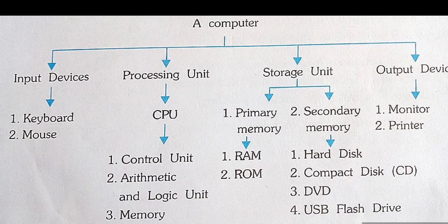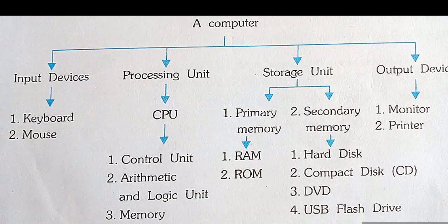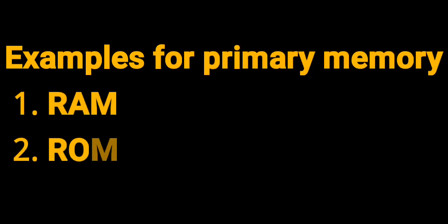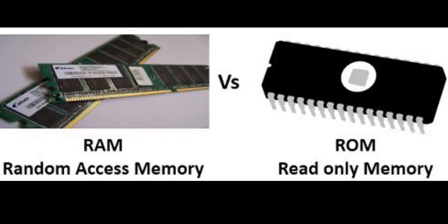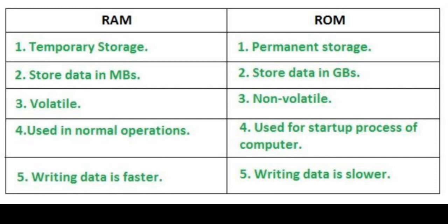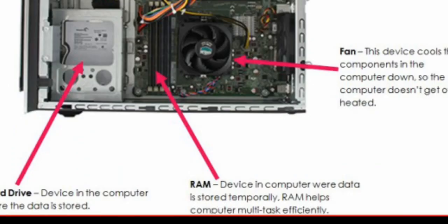The next component is the storage unit. Memory is a storage area where the computer stores data; it can be retrieved for future use. Storage is classified into two types: primary memory and secondary memory. Primary memory includes RAM — Random Access Memory — where storage of data is temporary, and ROM — Read Only Memory — where storage of data is permanent. ROM is the permanent storage memory of the computer system.